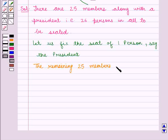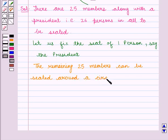25 members can be seated around a circular table in 25 factorial number of ways.